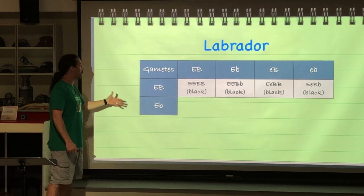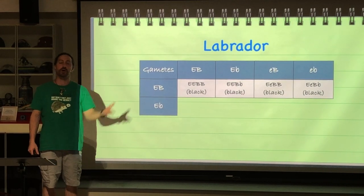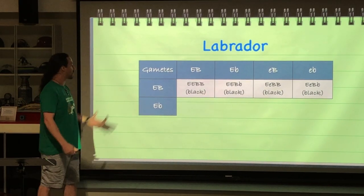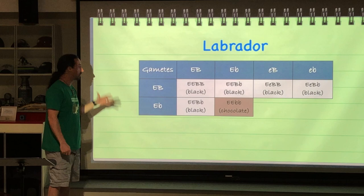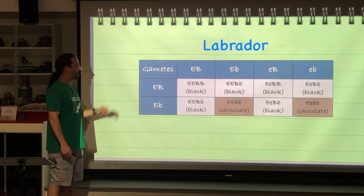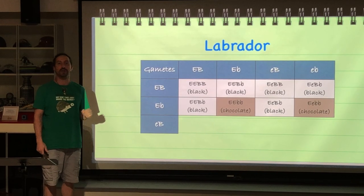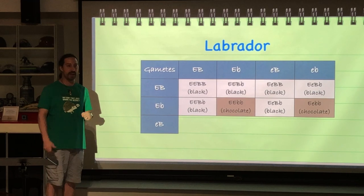If we take a gamete that is dominant for the first gene but recessive for the second, we end up with two black and two chocolate. If the offspring ends up homozygous recessive for the second gene, they end up being chocolate in color.